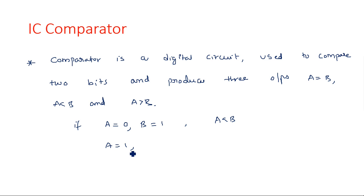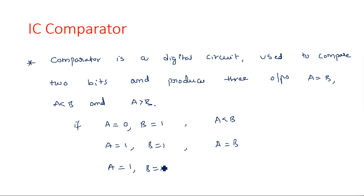Similarly, if A is equal to 1 and B is equal to 1, then A equal to B output is 1 and the remaining two cases are 0. And if A is equal to 1 and B is equal to 0, then A greater than B is equal to 1 and the remaining two cases are 0.